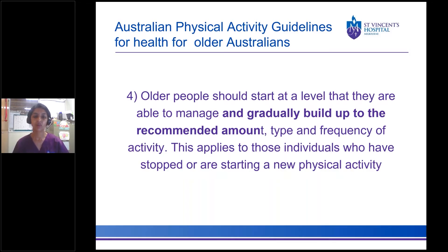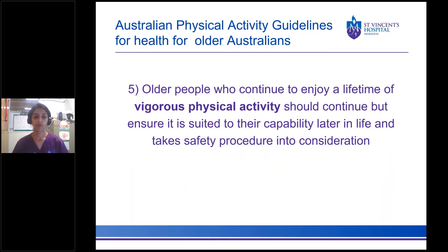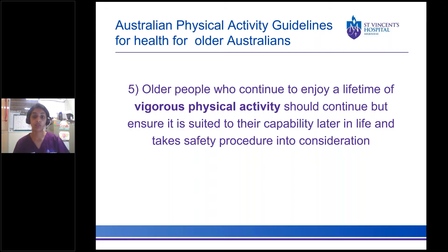The fourth point is that older people should start at a level they're able to manage and slowly and gradually build up to the recommended amount, type, and frequency of activity — this also applies to people who have stopped exercising or are starting a new activity. The fifth point is that older people who have previously been involved in vigorous activity should continue with this, ensuring it's suited to their capability later in life and taking into consideration any safety precautions or health conditions. Vigorous physical activity makes your heart beat a lot faster, makes you very short of breath, and it's quite challenging to speak between deep breaths.